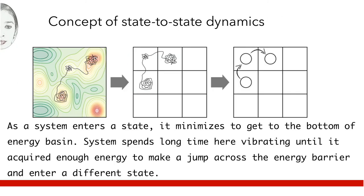We show energy basins with the help of a contour plot. Each energy basin is a potential stable state for the system. When a system enters a state, it minimizes to get to the bottom of the energy basin. Here the system spends long time vibrating until it moves across the energy barrier to the next state.